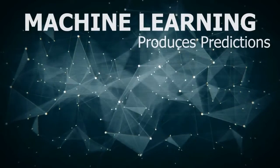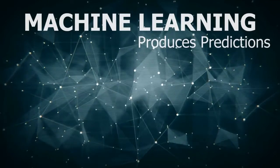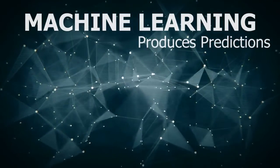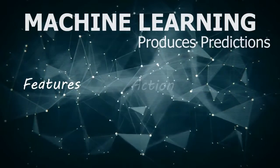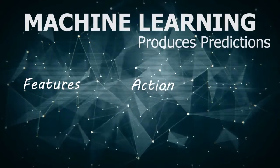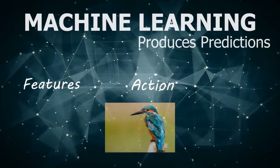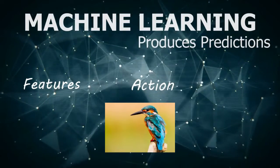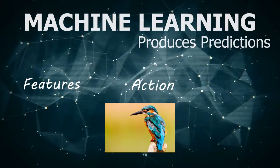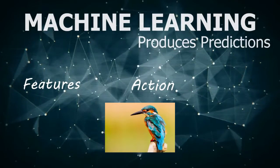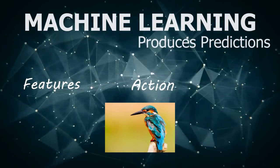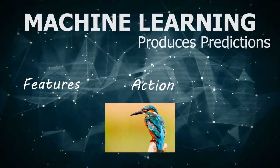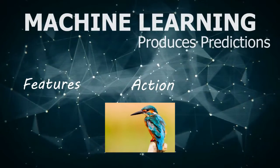Next comes Machine Learning. Machine Learning is the field which produces predictions. Suppose you have a list of features, and with the use of machine learning techniques, we predict the required action — for example, predicting whether an image has a bird in it. In a real-world example, we have seen Netflix employing machine learning algorithms to show recommendations tailor-made for individual users. Even the Google search engine employs machine learning techniques to show search results relevant to individual users.